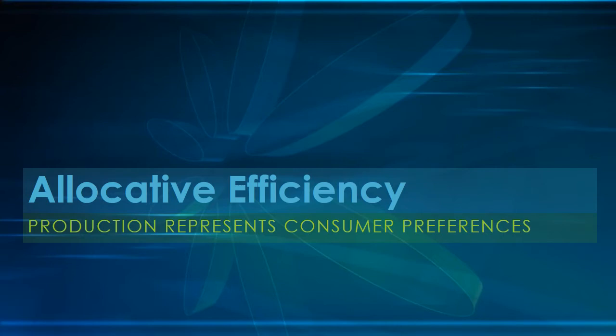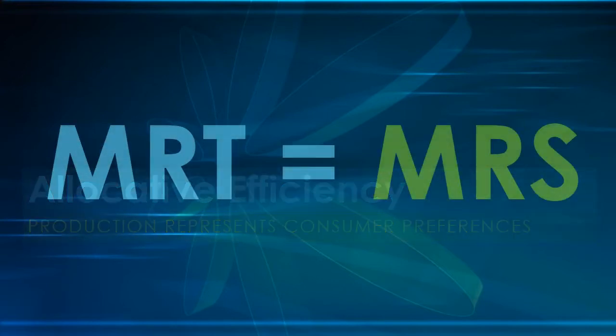Allocative efficiency means our production is allocated correctly — production matches the consumption preferences. Every good or service is produced up to the point where the last unit provides a marginal benefit to consumers equal to the marginal cost of producing. Another way to think of allocative efficiency is that the marginal rate of transformation equals the marginal rate of substitution, or in general equilibrium terms, we have output efficiency.